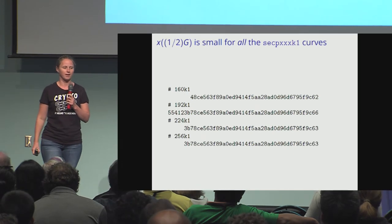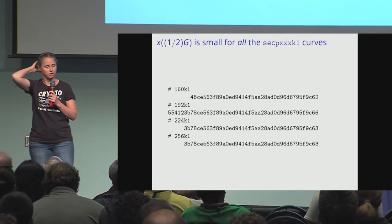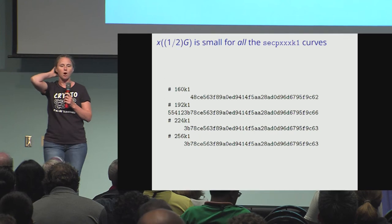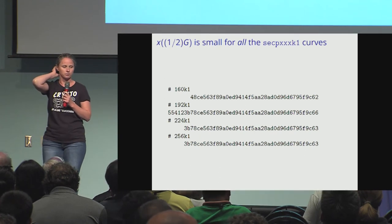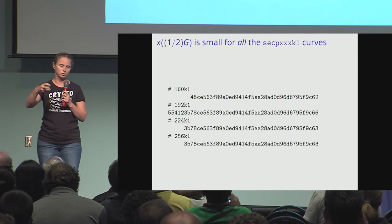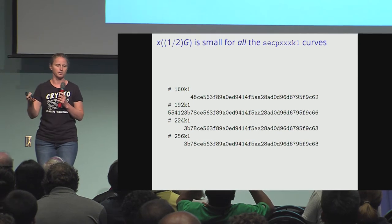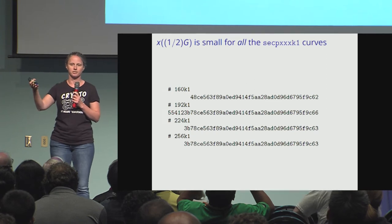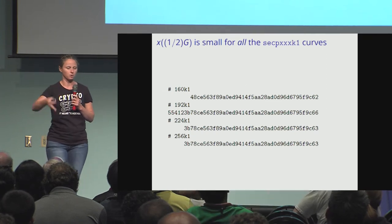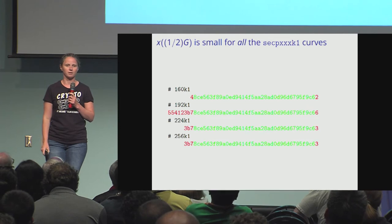It turns out that if you look at a half times the generator — the x-coordinate for the half times the generator — for all of this family of curves, the prime-order Koblitz curves from SEC 2, they have the same property. For a 160-bit curve, you would expect a 160-bit x-coordinate, but the rest of them are all small, and in fact they all share almost all of their bits in common.